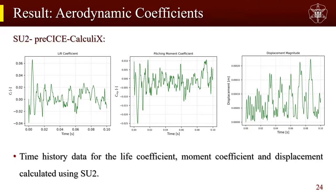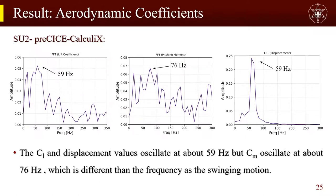Time history data for CL, CM, and displacement calculated by the SU2–preCICE–CalculiX model is shown here. Similar fluctuating behavior is observed. The frequency analysis was carried out by fast Fourier transform. In this case, the CL and displacement values oscillated at about 59 Hz, but the pitching moment coefficient oscillated at about 76 Hz, which differs from the frequency of the swinging motion. The reason behind this difference might be that numerical convergence has not yet been reached due to the shorter time duration of the analysis, and further investigation is needed for validation.